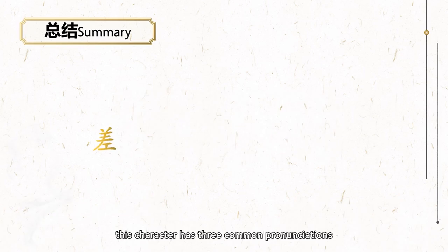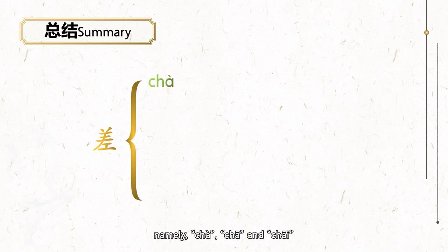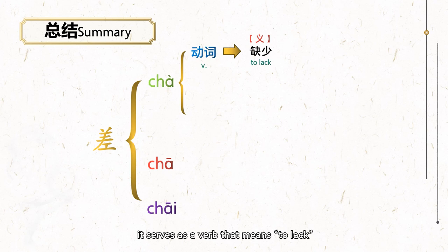To sum up, this character has three common pronunciations, namely chà, chā, and chāi. When it is read as chà, it serves as a verb that means to lack and is often followed by words that indicate the degree of difference. For example, 差一个人.